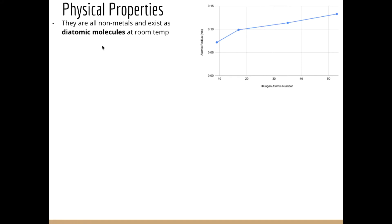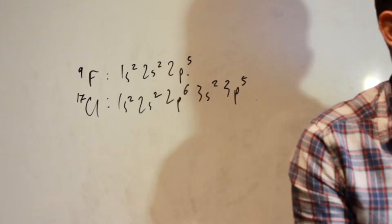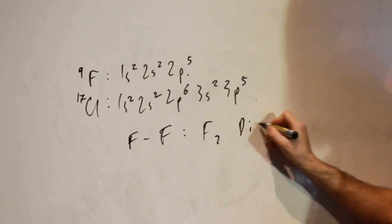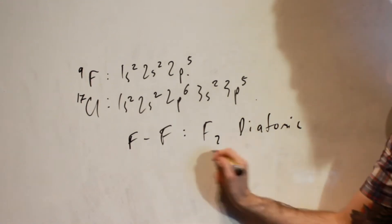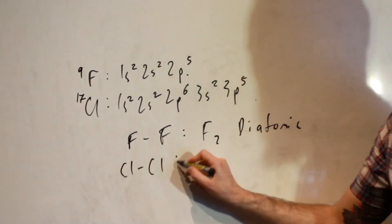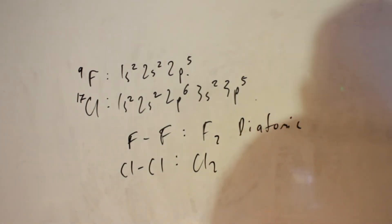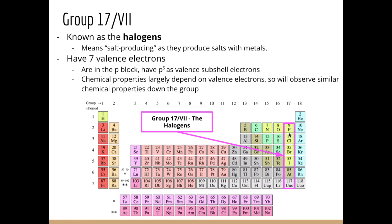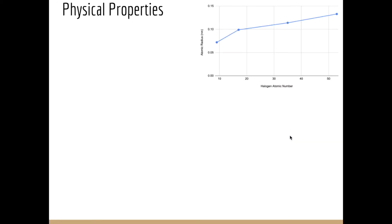They are all non-metals, and the halogens exist as diatomic molecules at room temperature. Since they can form one covalent bond, they make diatomic — meaning two-atom — molecules, such as F2 and Cl2. The reason for increasing atomic radii is that as we go down the group, we add a principal quantum level each time, making the atom larger. Fluorine has two principal quantum levels, chlorine has three, bromine has four, and so on.